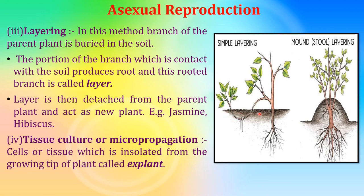The third artificial method is layering. In this method, a branch of the parent plant is buried in the soil. The portion of the branch in contact with the soil produces roots. This rooted branch is called a layer, which is then detached from the parent plant and acts as a new plant. Examples: jasmine and hibiscus.